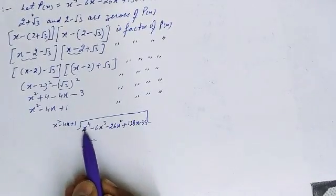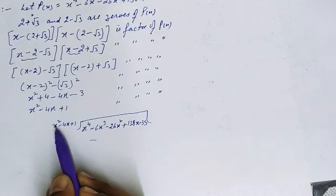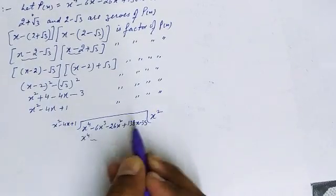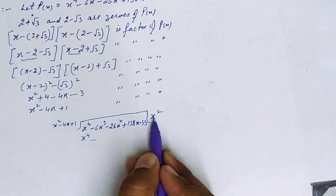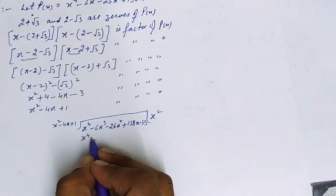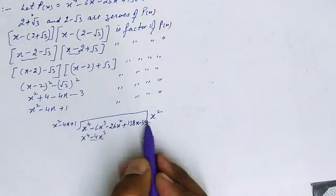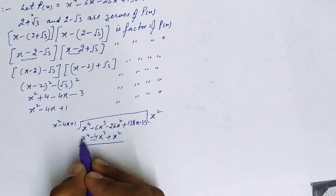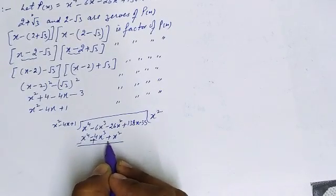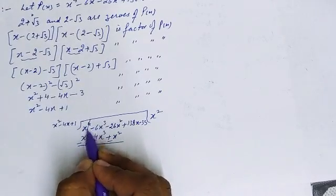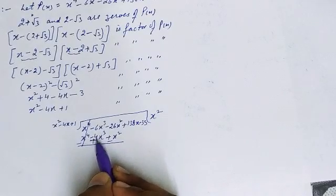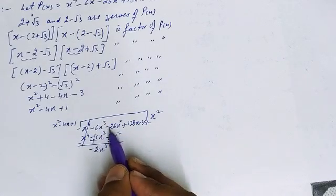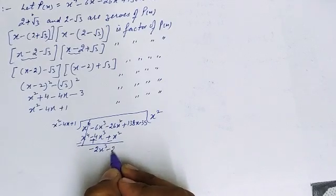The divisor is x² and the leading term of p(x) is x⁴. To get x⁴, multiply x² by x². So x² × x² = x⁴, x² × (-4x) = -4x³, and x² × 1 = x². After changing signs and subtracting: x⁴ cancels, -6x³ + 4x³ = -2x³, and -26x² - x² = -27x².